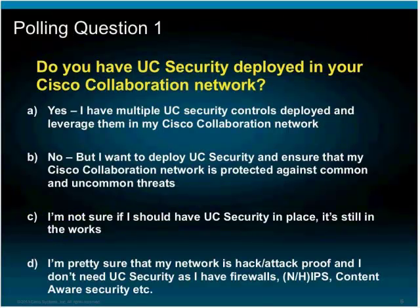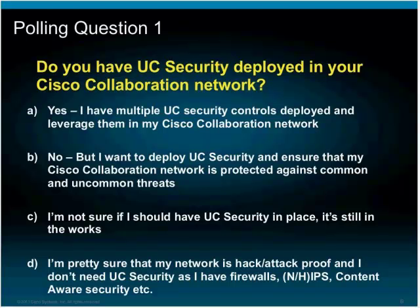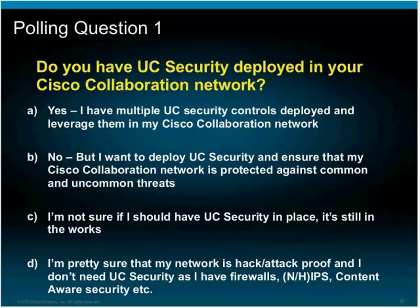Let's get started with today's first polling question. The question is: do you have UC security deployed in your Cisco collaboration network? Option A: yes, I have multiple UC security controls deployed. Option B: no, but I want to deploy UC security. Option C: I'm not sure if I should have UC security in place. Option D: I'm pretty sure my network is hack/attack-proof and I don't need UC security as I have firewalls, IPS, content-aware security, etc. The poll is open on the right-hand side.